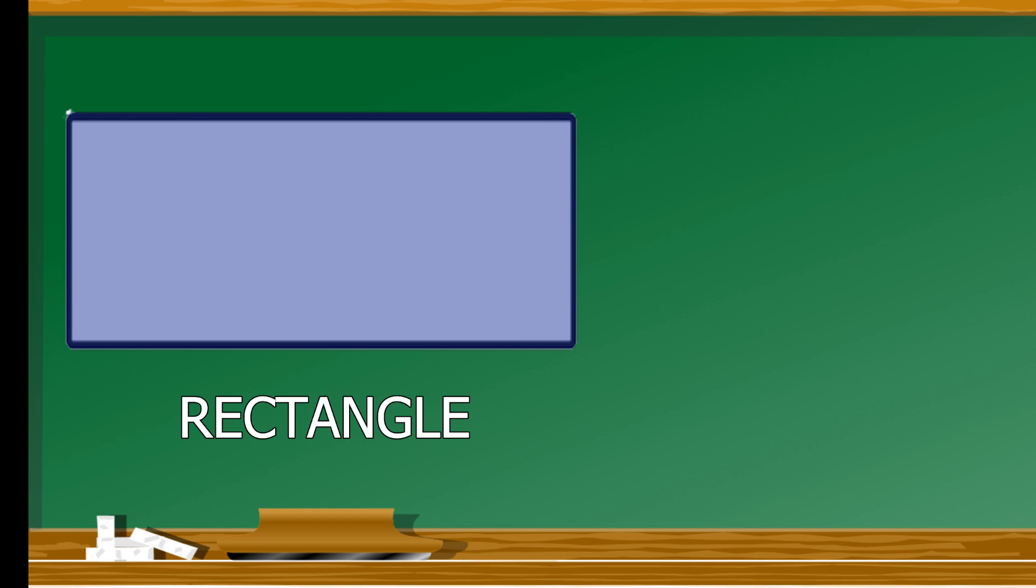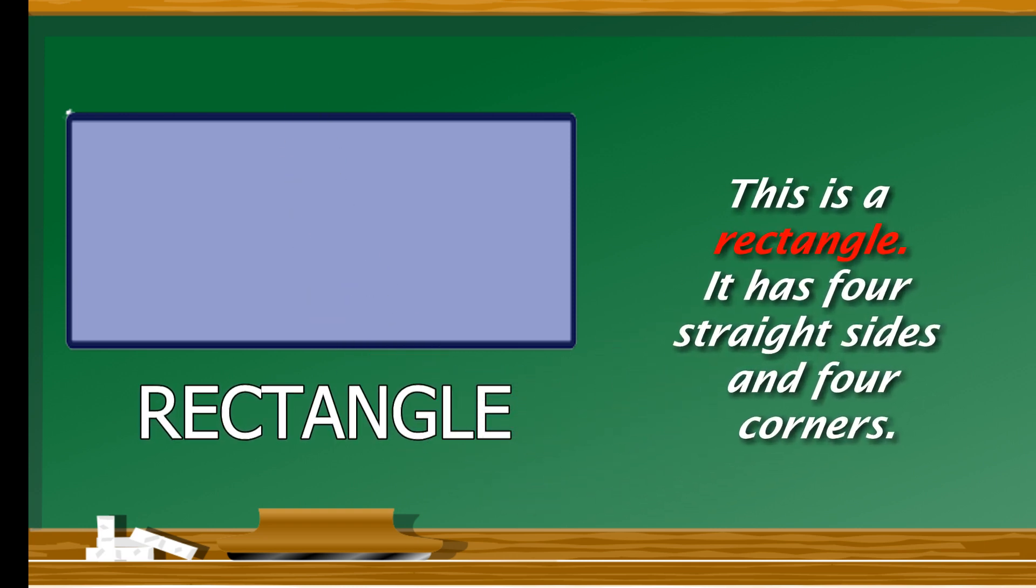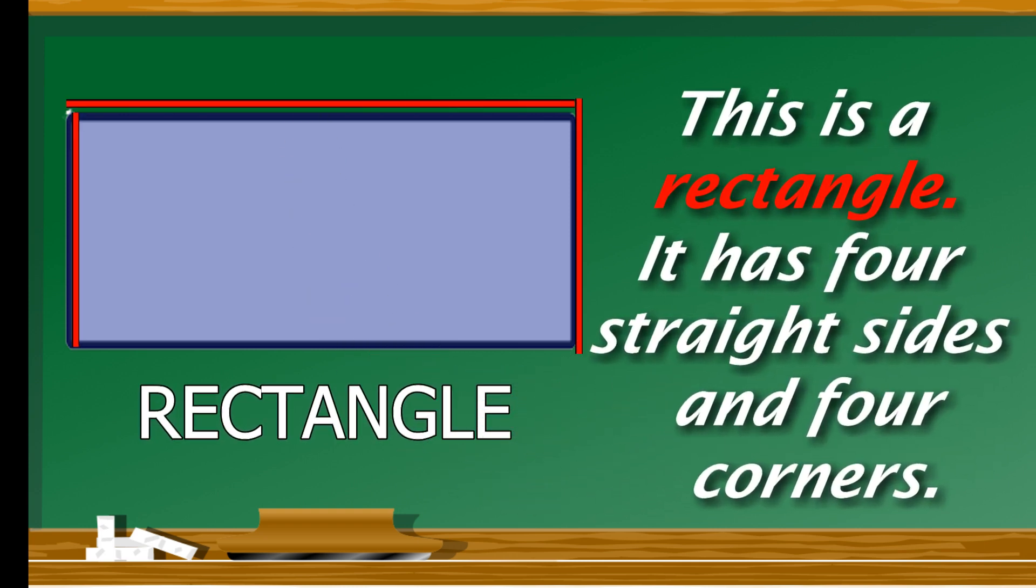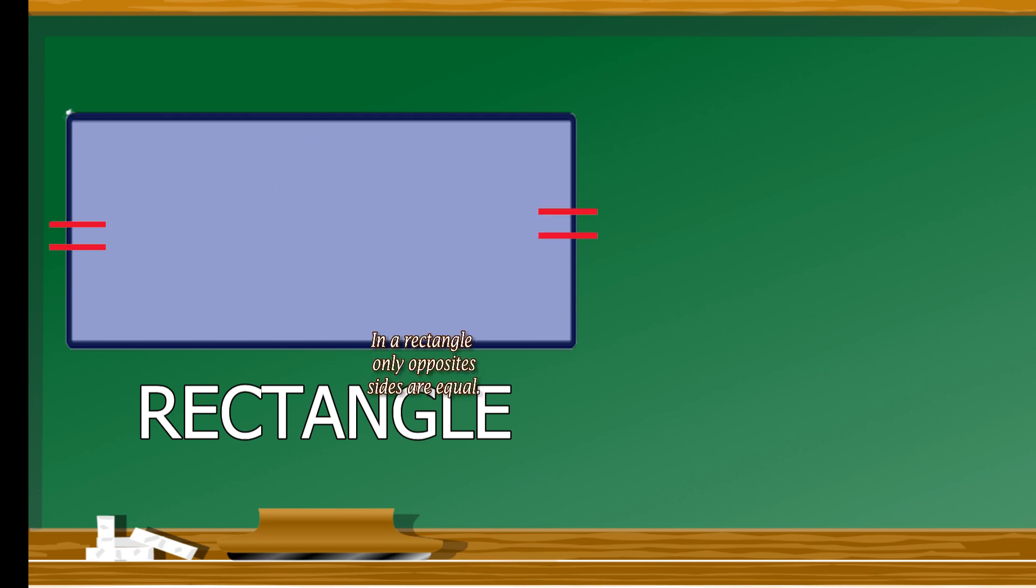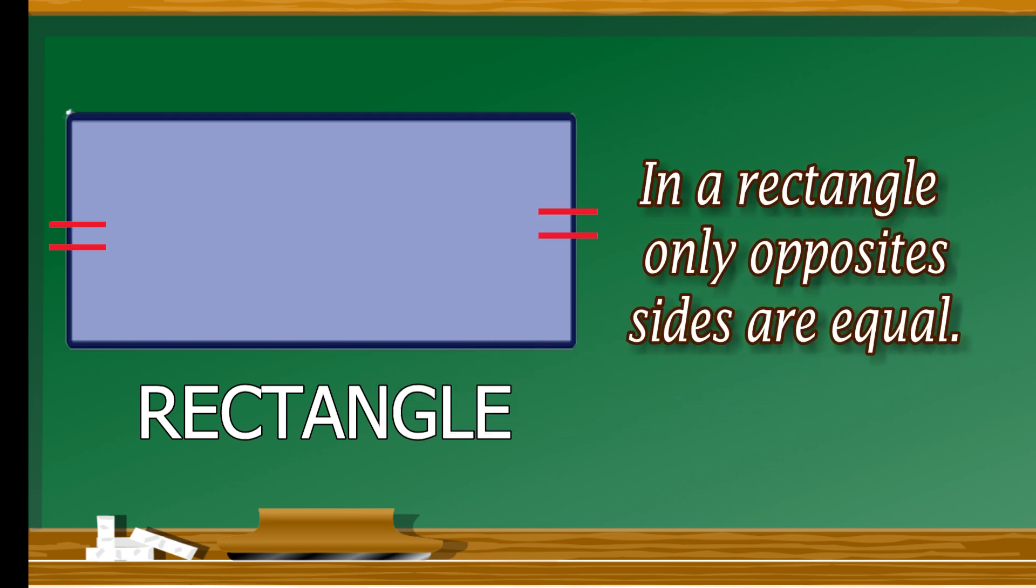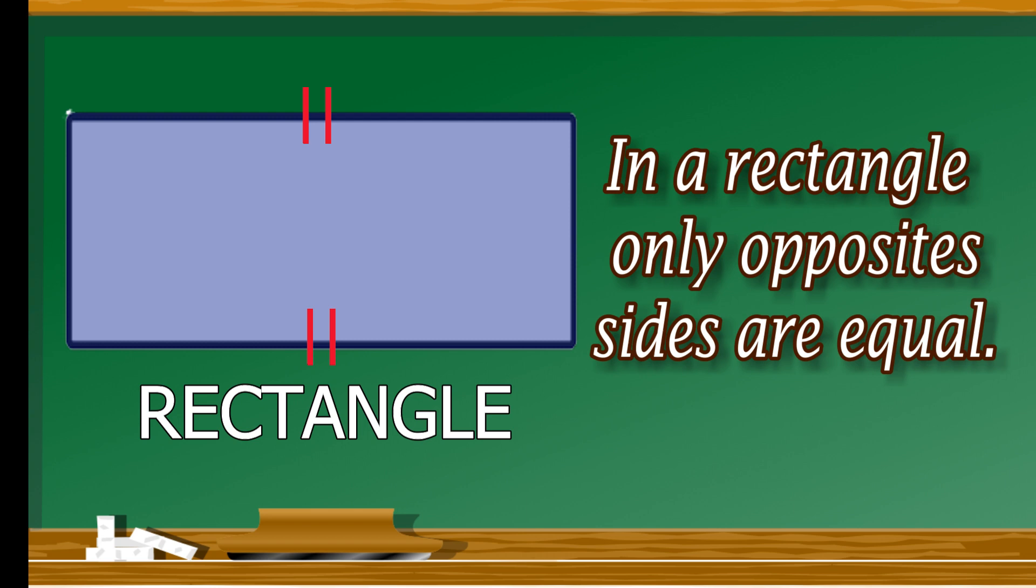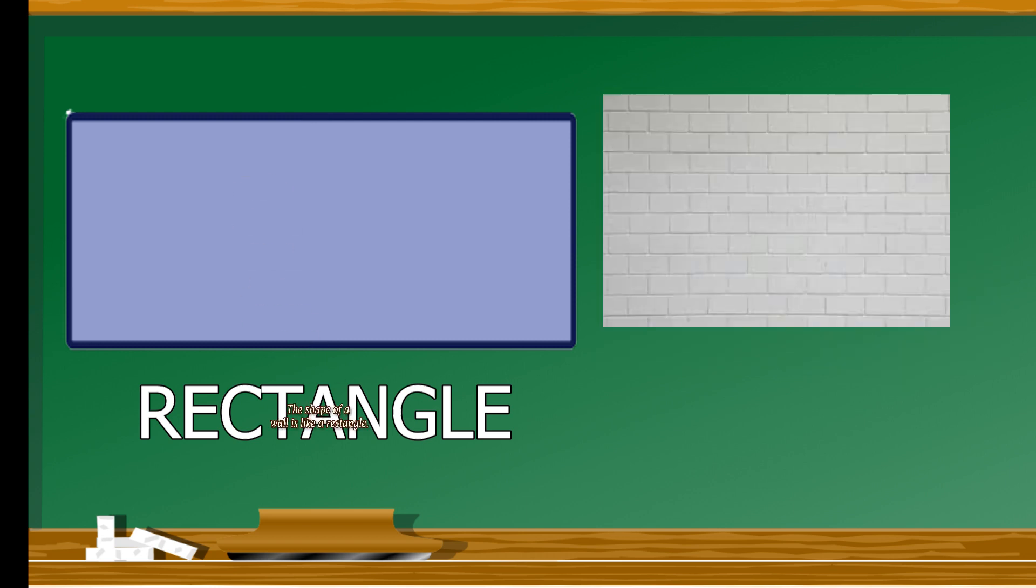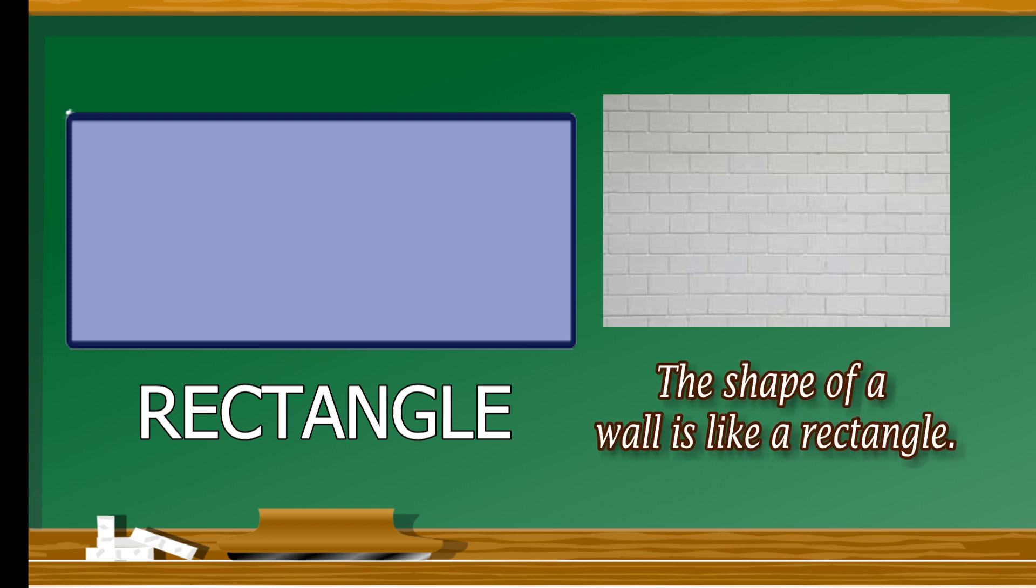Rectangle. This is a rectangle. It also has four straight sides and four corners, but in a rectangle, only opposite sides are equal. The shape of a wall is like a rectangle.